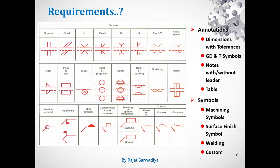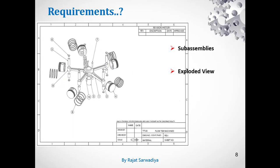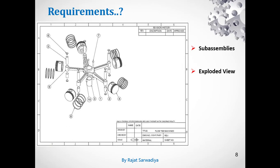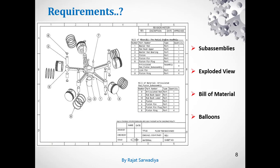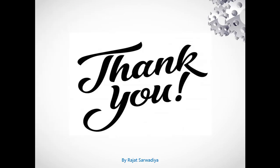Similarly, for assembly drawings, you will need to place sub-assemblies, exploded views, a bill of materials, and balloons so that each and every part in the assembly or sub-assembly is identified and assembled at the right place. This was all about the engineering drawing and the things required. The sequence is most important — whether you use software, paper and pen, or any other method, the sequence will essentially remain the same. Thank you.